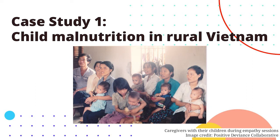When the government turned to Save the Children, they had a really clear mandate: find a sustainable, large-scale solution based on local resources and expertise that would show results within six months. The Sternens decided to test out their framework and see what would happen if they started to learn from and practice behaviors from positive deviants within the rural communities, rather than trying to fix the negative outliers, which is the more traditional approach to problem solving.